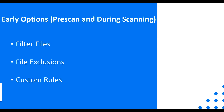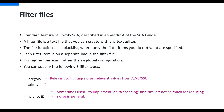Let's go over the early options - things you can do before or during scanning: filter files, file exclusions, and custom rules. The first pre-scan option is filter files. Filter files are an early way to reduce noise and are a standard feature in SCA. Instructions can be found within your SCA guide - if you don't have one, simply Google 'SCA guide' and then the version number. Essentially these are text files you can create with any text editor that function as a blacklist and filter out the items specified.